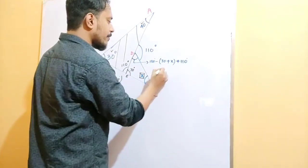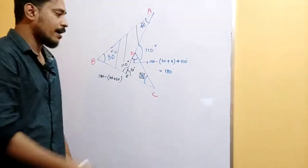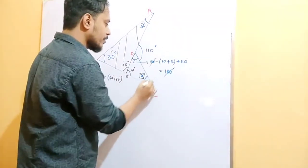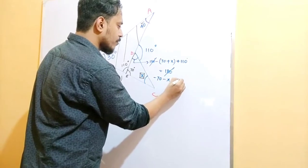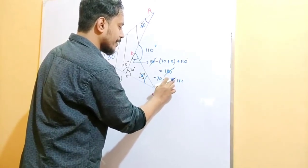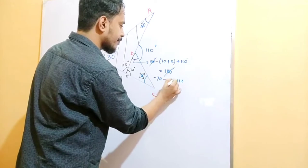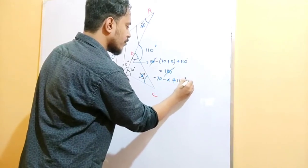So, 180 and 180 cancel each other. So, minus 70 minus X, which is equal to plus 110, which is equal to 0.